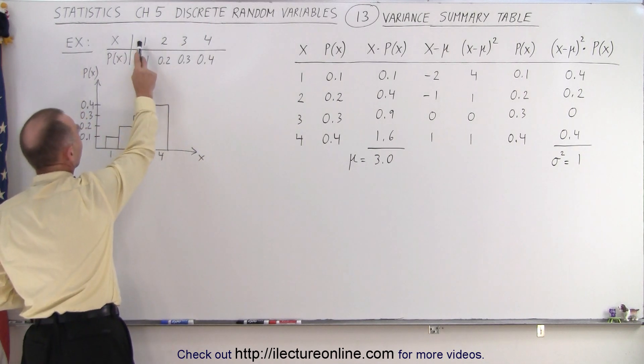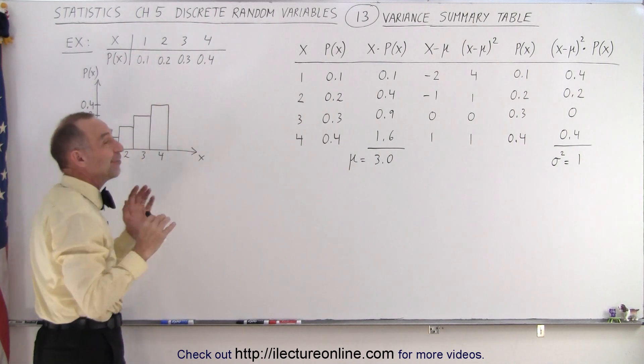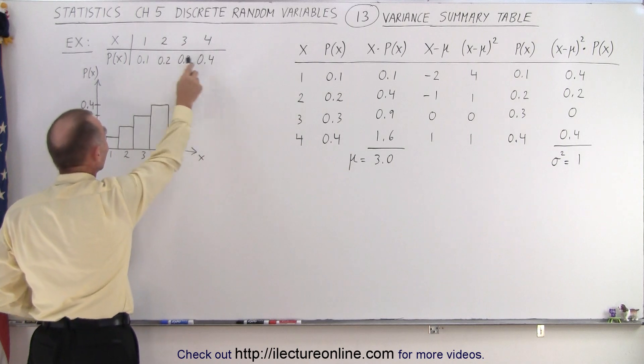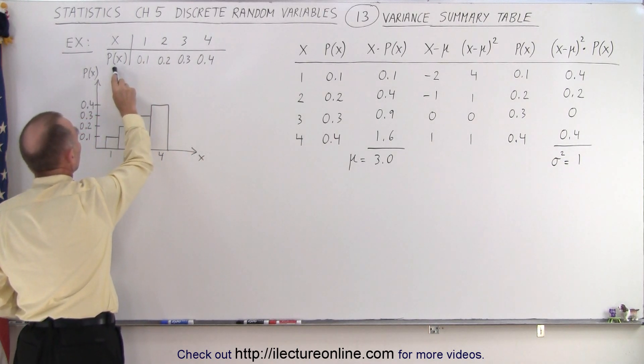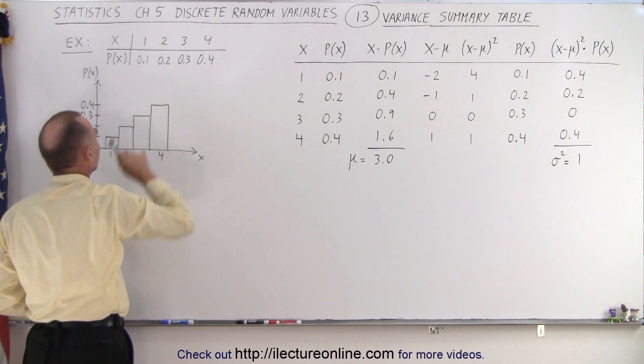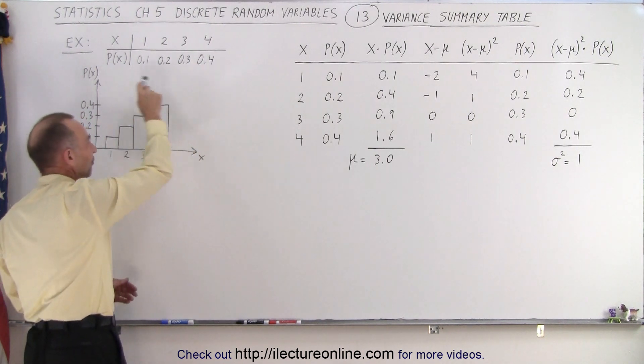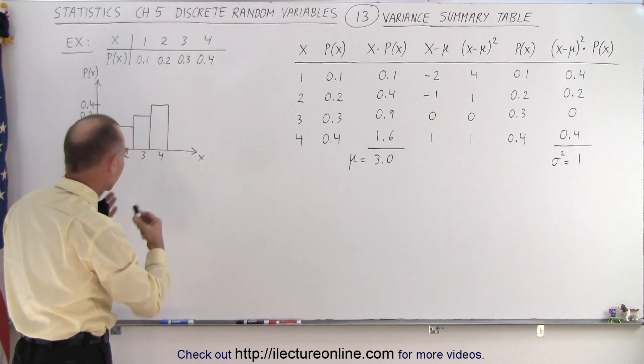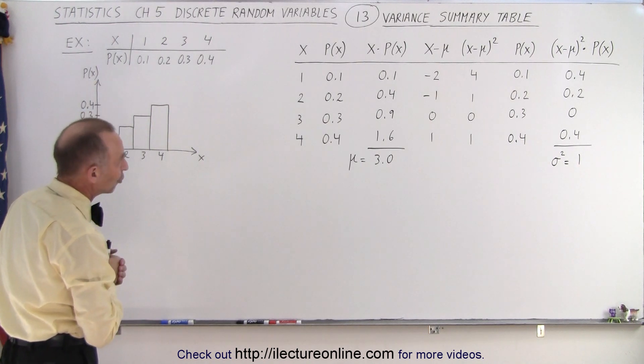We have the possible values for x being 1, 2, 3, 4, and the corresponding probabilities of each of those four values as 0.1, 0.2, 0.3, and 0.4. And of course here we have a visual representation of what that looks like through a histogram of the probability distribution.